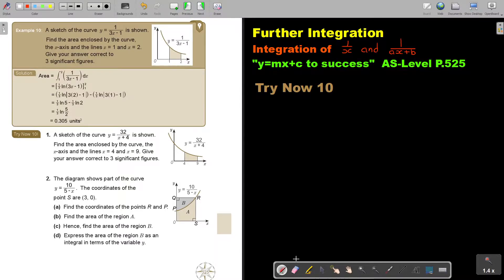In this video, we will continue with integration of 1 over x and 1 over ax plus b. You will find this on page 525 in the Namibia AS level mathematics textbook y equals mx plus c to success.